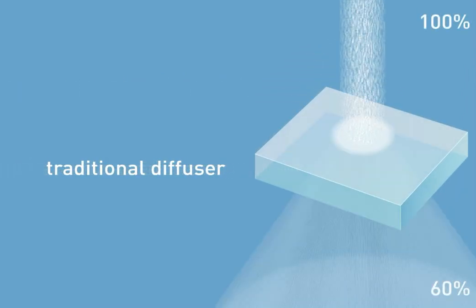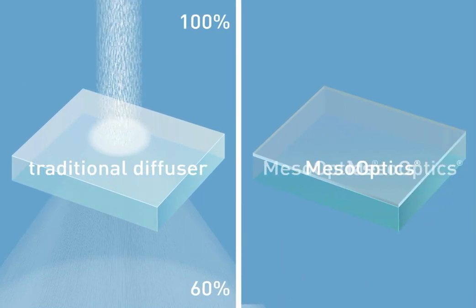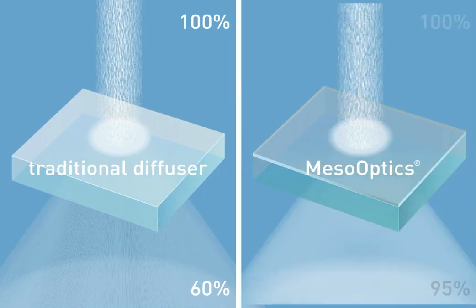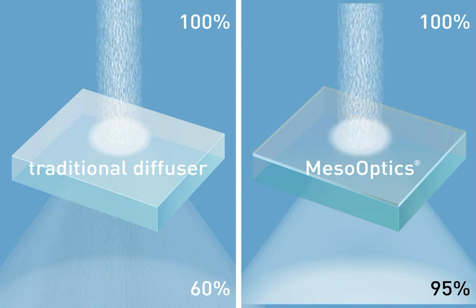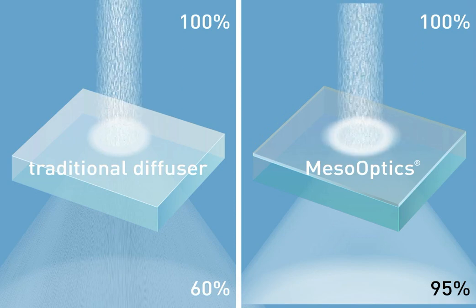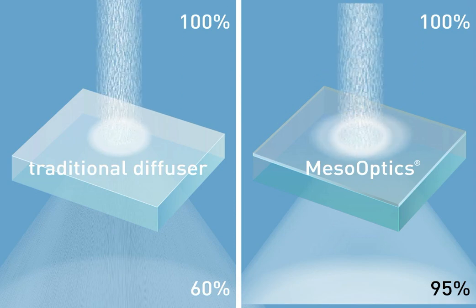MesoOptics helps us sustain the environment. It is an extremely efficient material that allows up to 95% of the light that enters to pass through. This enables the creation of highly energy-efficient lighting products that are environmentally responsible and visually healthy.